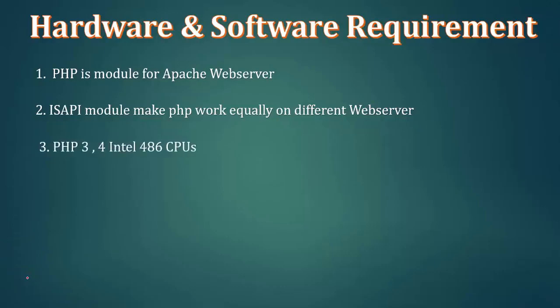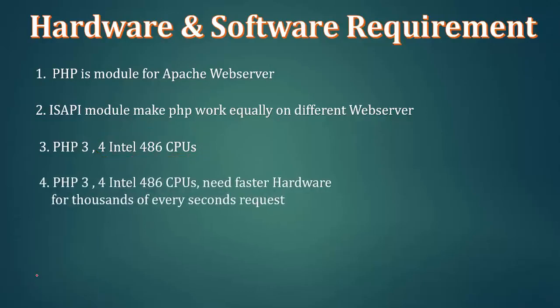Now, in PHP version 3, Intel has a 4.8 CPU, which is a double-locker. Intel has a 4.8x CPU. This is the 3 and 4 — this is the 480x CPU.